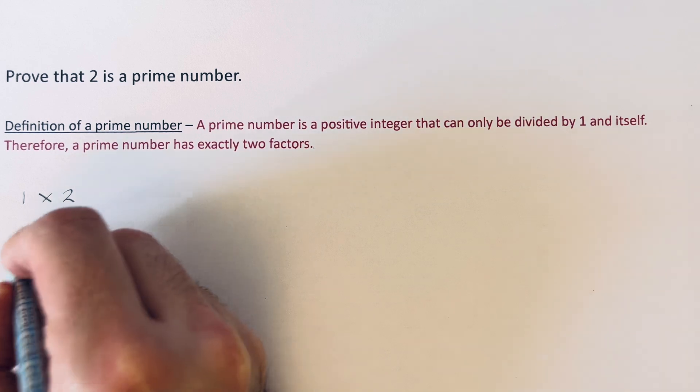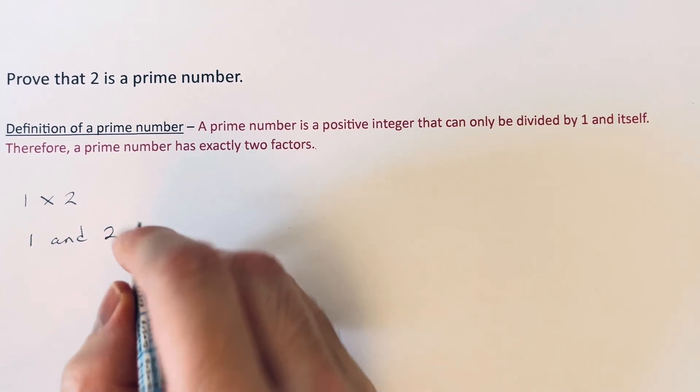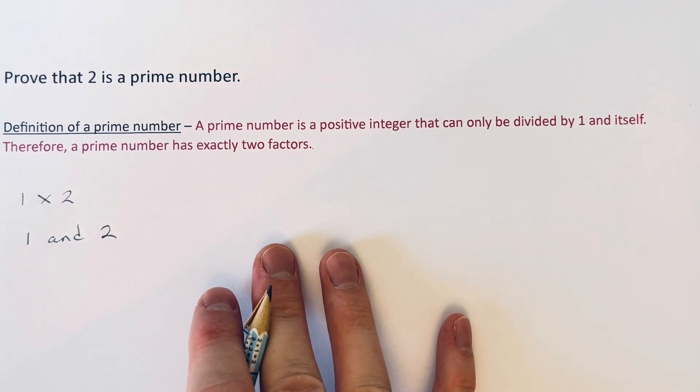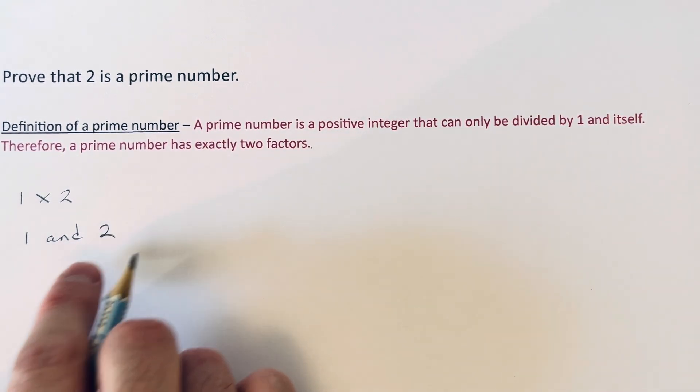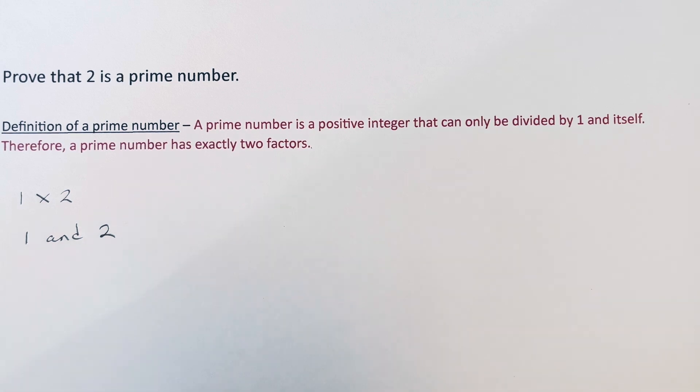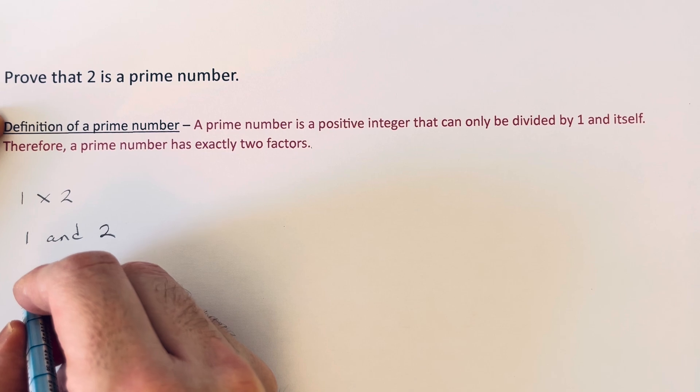The only factors we've got are 1 and 2. So since a prime number has exactly two factors, which we've got—1 and 2—that will make 2 a prime number. So let's put that in a sentence.